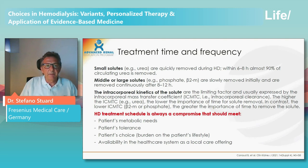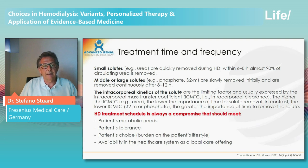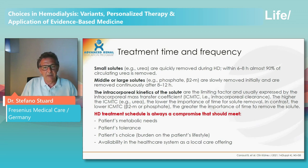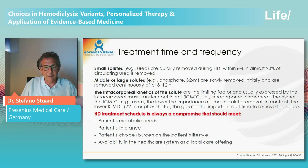Small molecules to be removed don't need a long treatment time, whereas for middle or large molecules it is really important to increase treatment time — it is not possible to remove them in the same time frame as urea. Six to eight hours per week of hemodialysis is always a compromise that should meet the patient's metabolic needs, patient tolerance, patient choice, and availability within the local healthcare system.